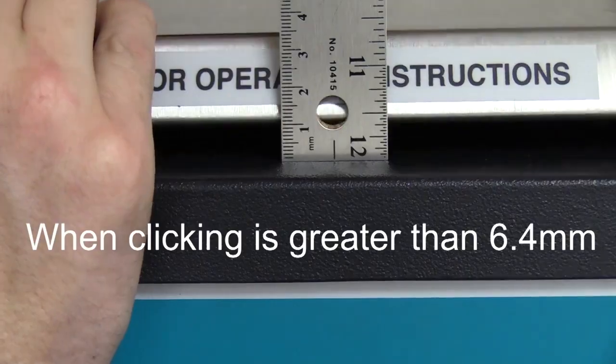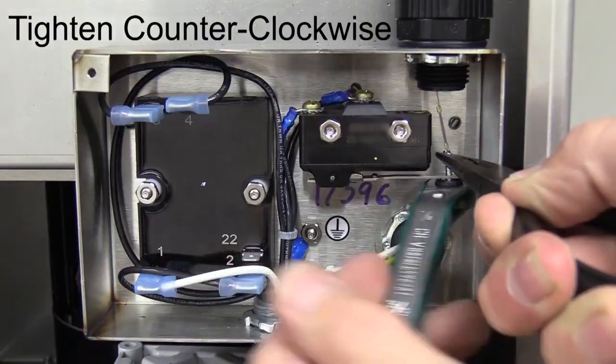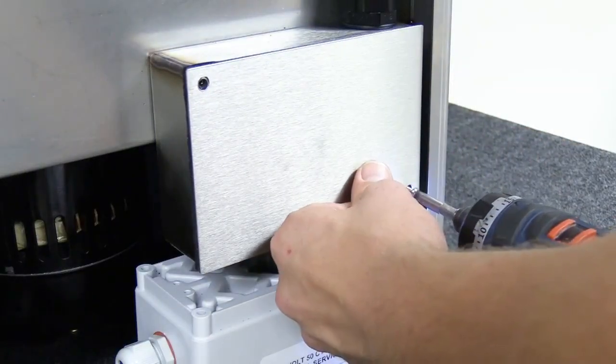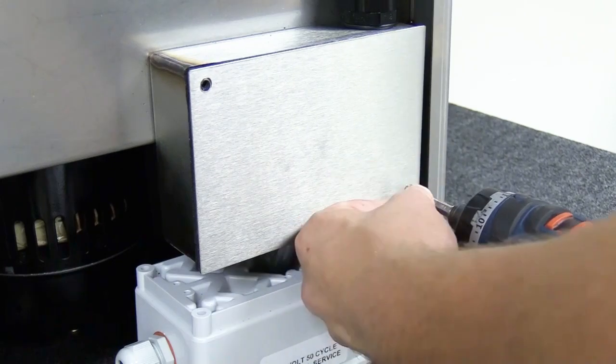Then, replace the microswitch box cover using the two machine screws set aside earlier.